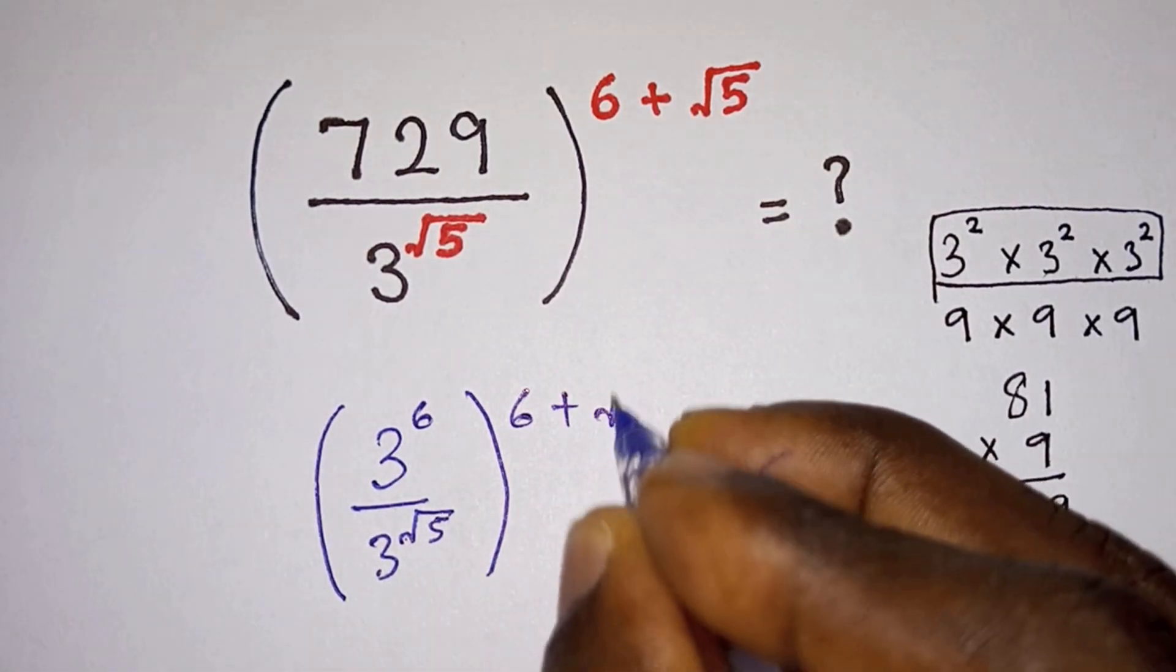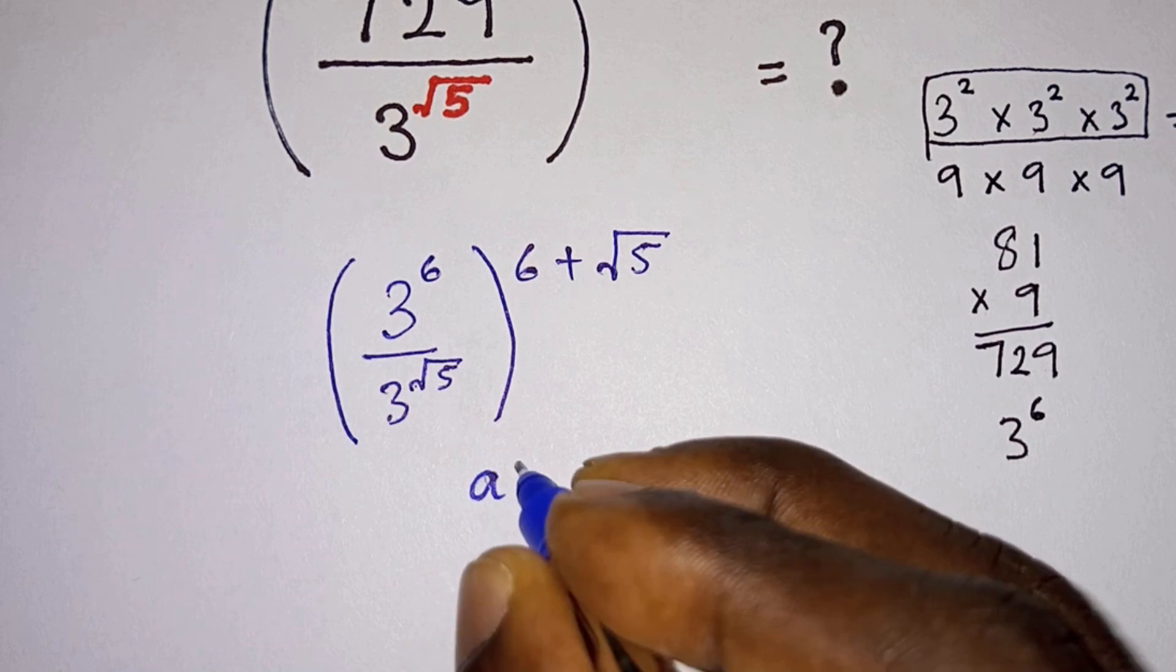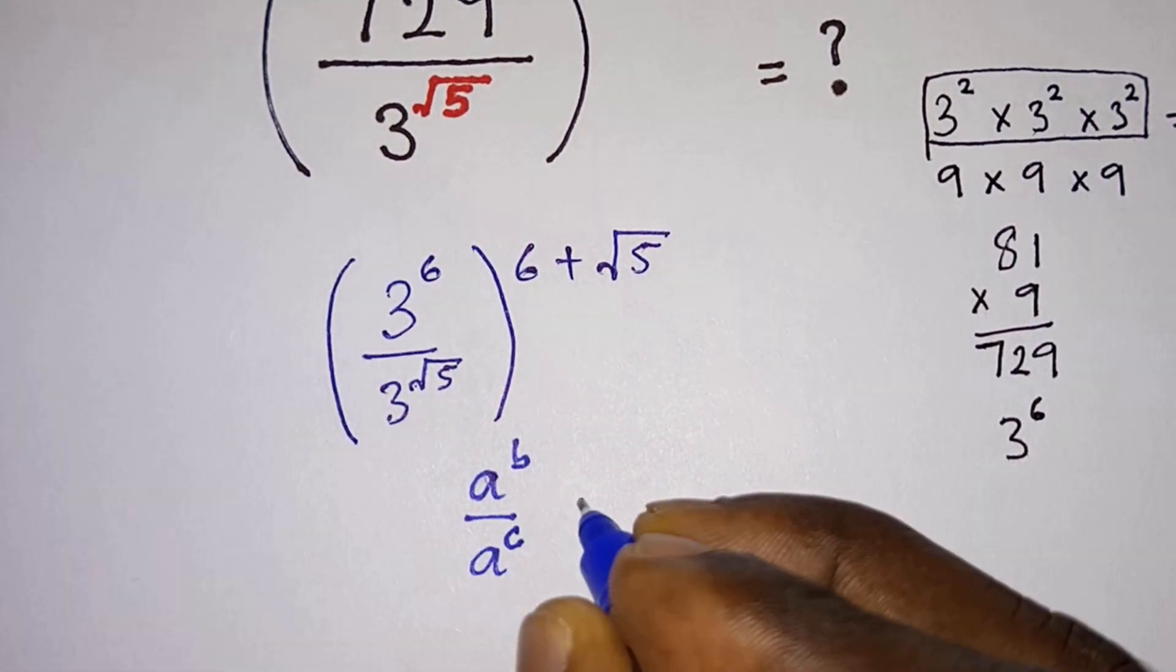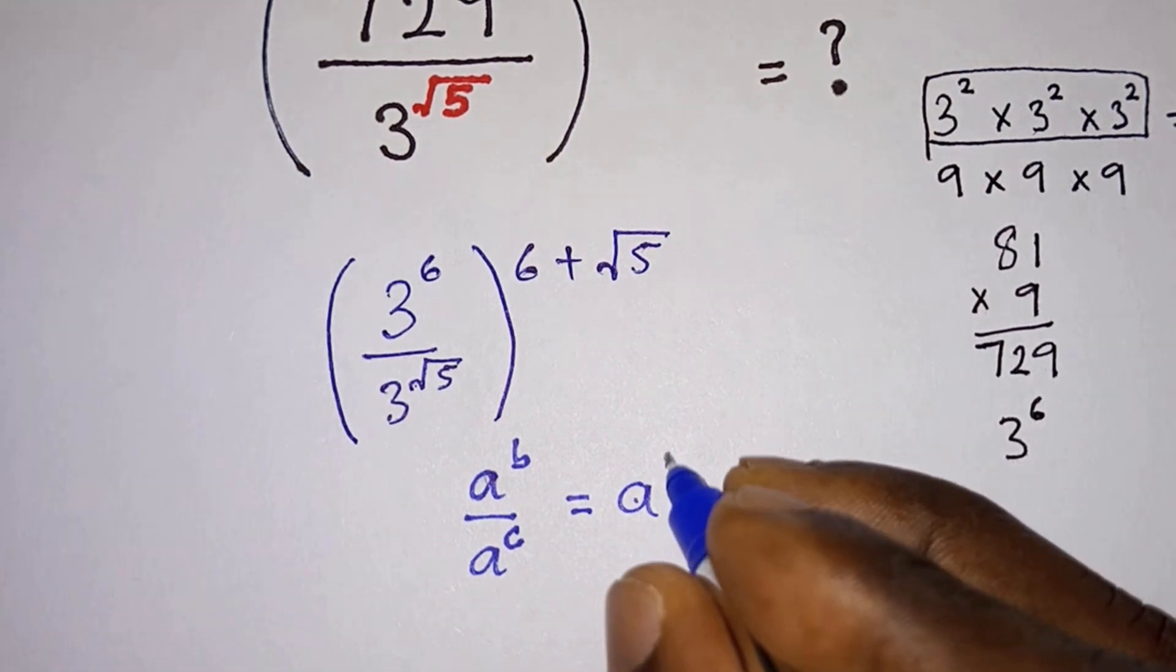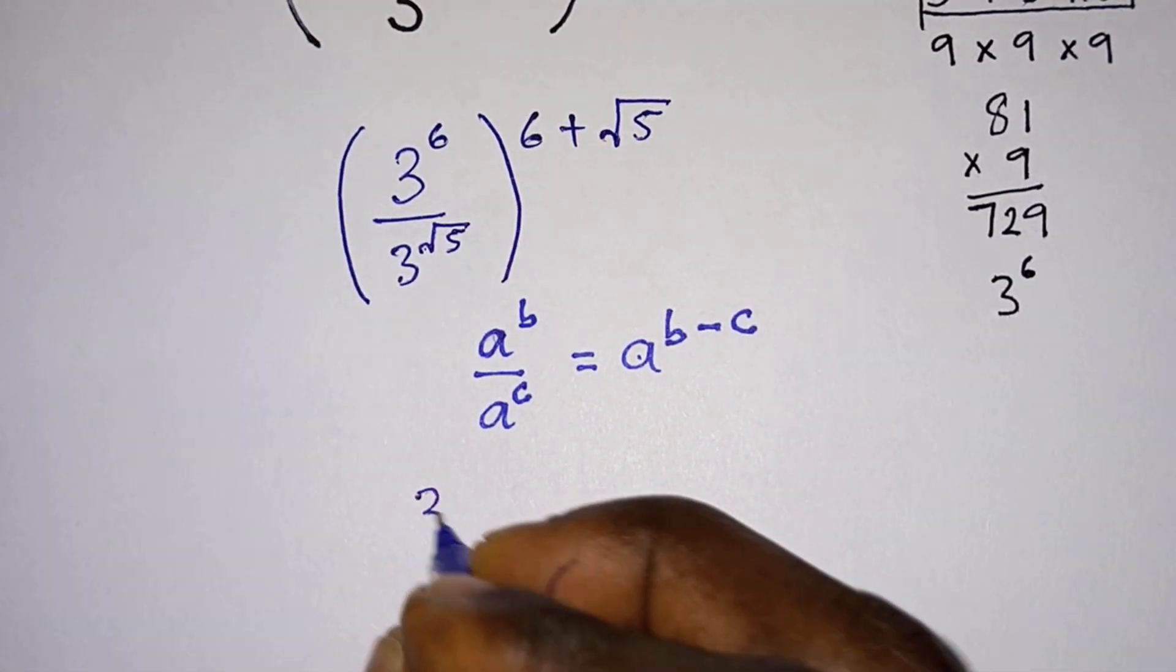Let's recall that a to the power b divided by a to the power c is the same as a to the power b minus c. So inside the parenthesis we can write it as 3 to the power 6 minus square root of 5.